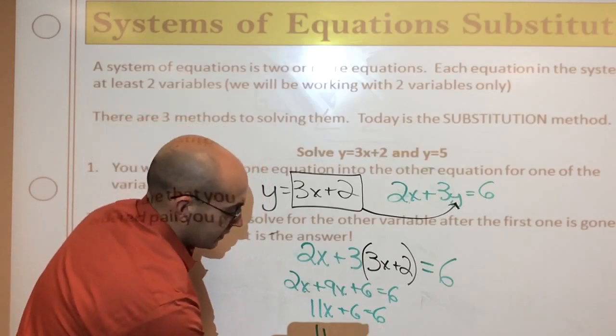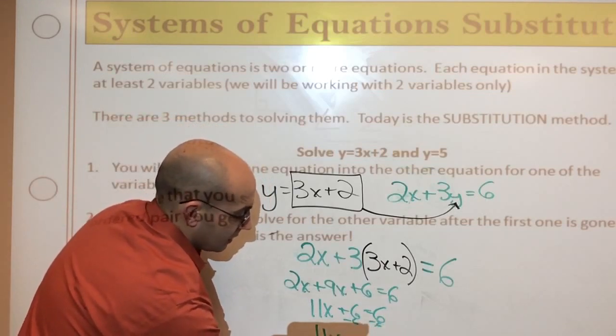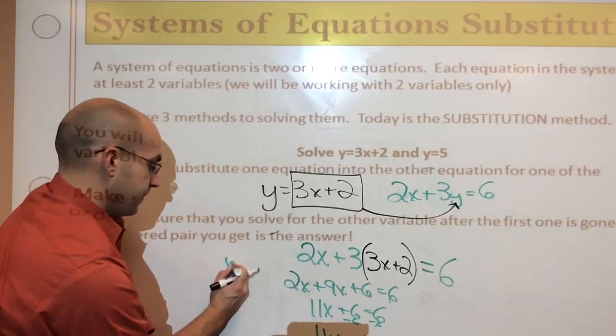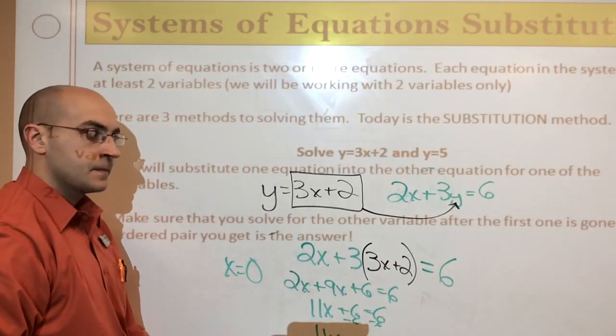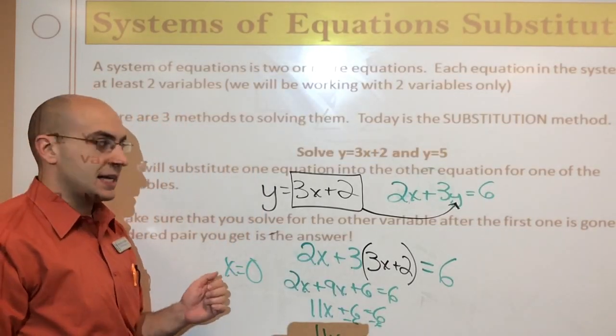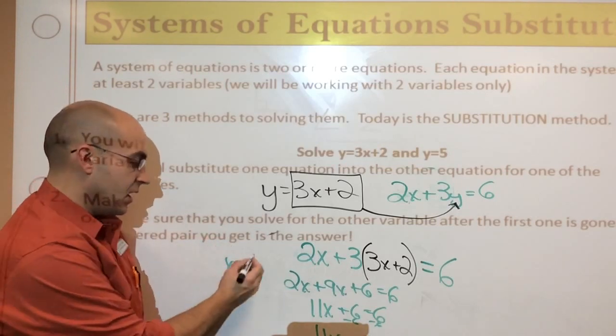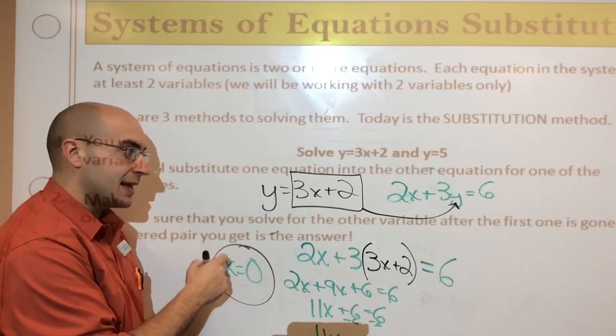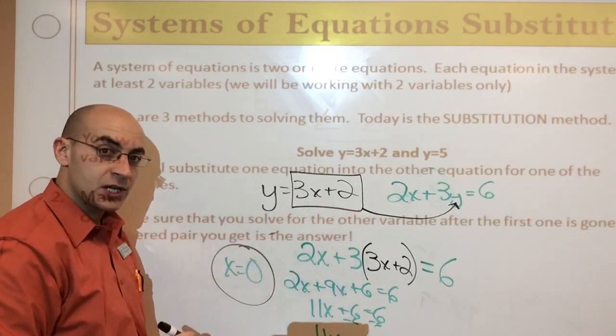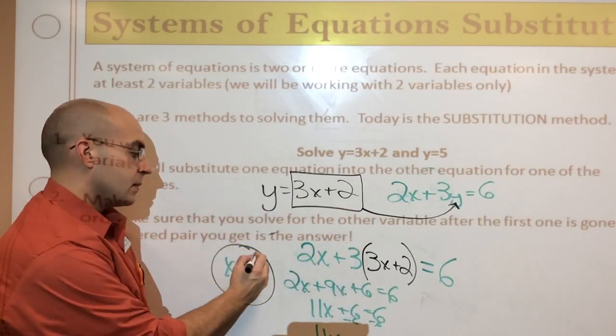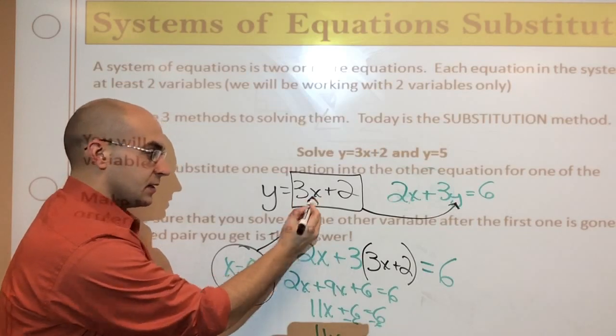So, I've got 11x minus 6 minus 6 on both sides. So, 11x equals 0. So, x is going to be 0. And I'm not done yet because I still need to solve for y. Now, this is the easier part because I know what x is. I can substitute this back into either one of these original equations to find y. I'm going to put this right over here because it's easy. Okay?